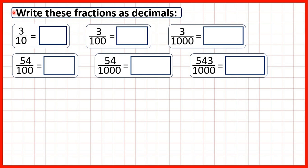We need to write these fractions as decimals. First we have 3 tenths. As a decimal that's 0.3, because the first digit after the decimal point always tells us how many tenths we have. We have zero before the decimal point because we can't have an empty ones column, but we don't have any whole numbers.